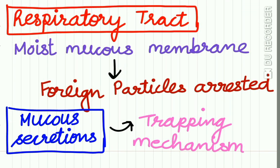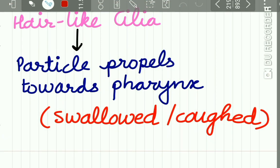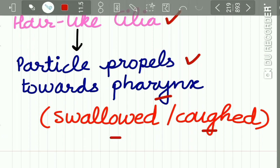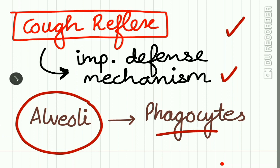The respiratory tract is made up of moist mucous membrane, which entraps foreign particles. The mucous secretions present on the nasal and respiratory tract epithelium help in entrapping foreign particles. The hair-like cilia present in the respiratory epithelium propel particles towards the pharynx, from where they may be swallowed or coughed out. The coughing reflex is also an important defense mechanism. Dirt particles that reach the alveoli of the lungs are attacked by phagocytes.